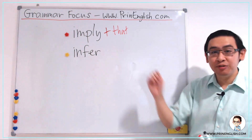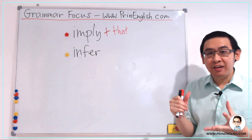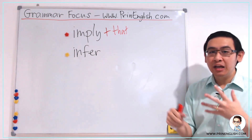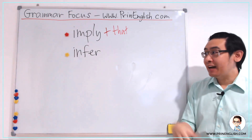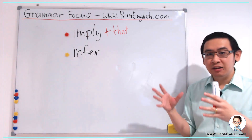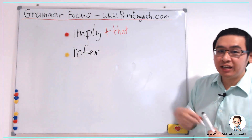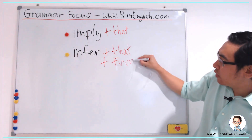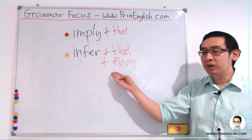What about infer? Infer is when you have an opinion based on some information that you have. So infer is like the opposite of imply — you have this opinion based on what you know or the information that you have received. For infer, you can also follow it with 'that,' and more commonly it is followed with 'from.' This is the main difference: you don't normally use imply with 'from,' but you usually use infer with 'from.'